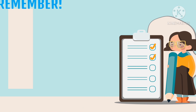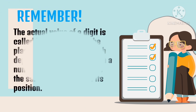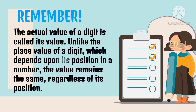We have to remember that the actual value of a digit is called its value. Unlike the place value of a digit, which depends upon its position in a number, the value remains the same regardless of its position.